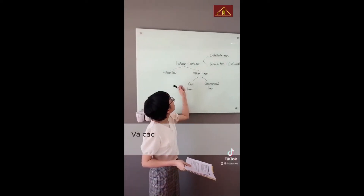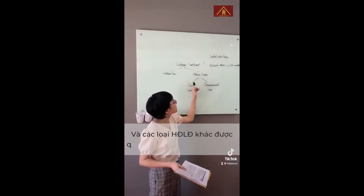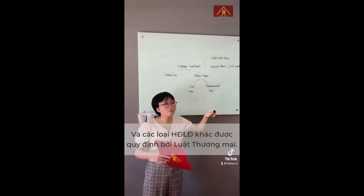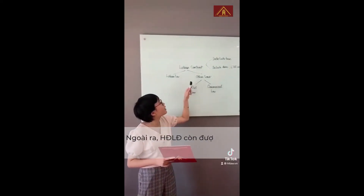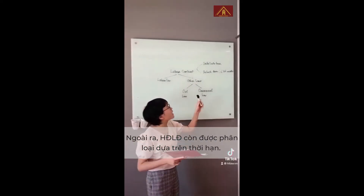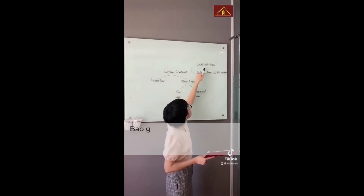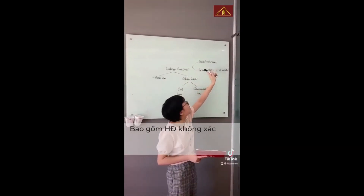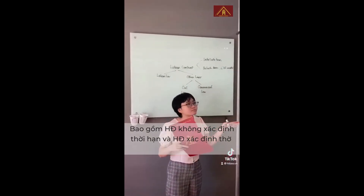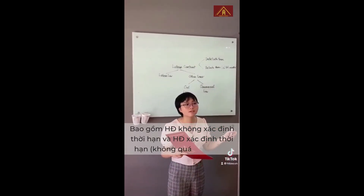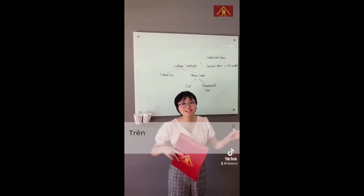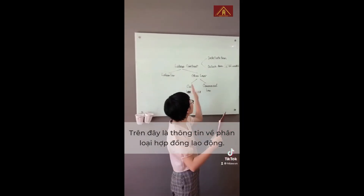There are some labor contracts which are under the commercial law. And if we divide the labor contract by duration, there are indefinite term labor contracts and definite term labor contracts, which are longer than 36 months. That is how we classify the labor contract.